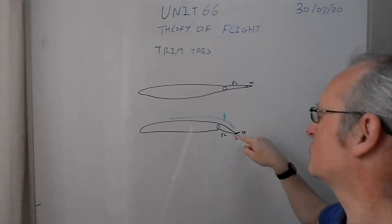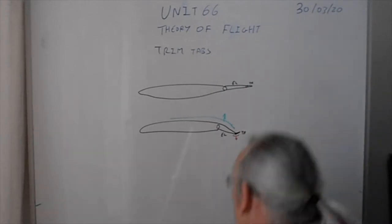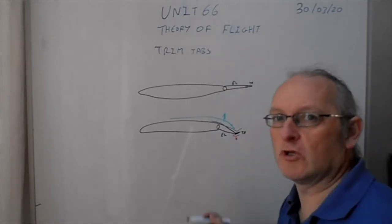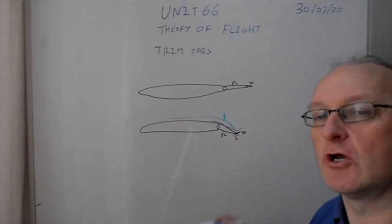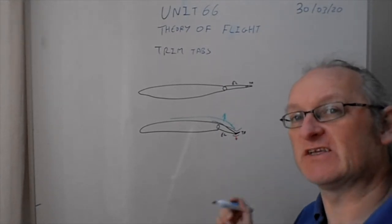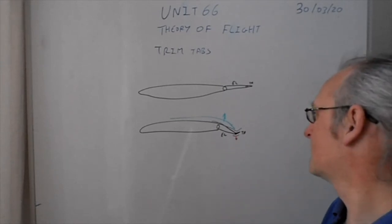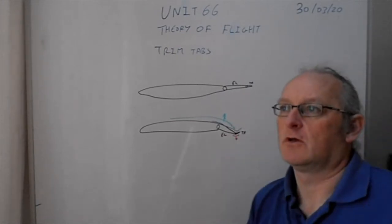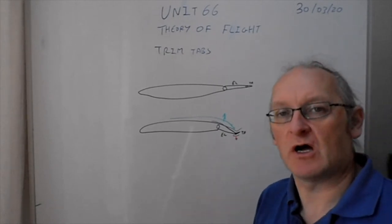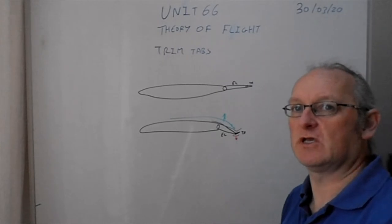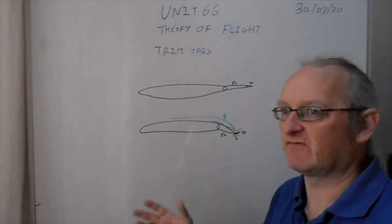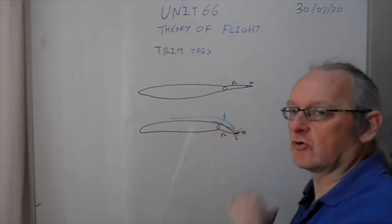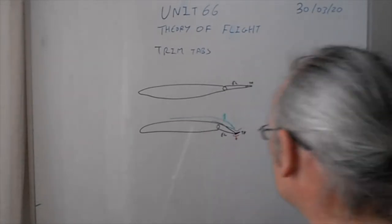That small amount of lift from the trim tab is going to hold the control surface — the elevator — in that position. The airflow comes along, deflects over the elevator, then deflects up over the trim tab, creating a small amount of lift at the trailing edge of the control surface to hold it in a set position. For any assessment, if asked to explain the operation of a trim tab, you need to show visually where the trim tab produces lift and how that holds the control surface in position.